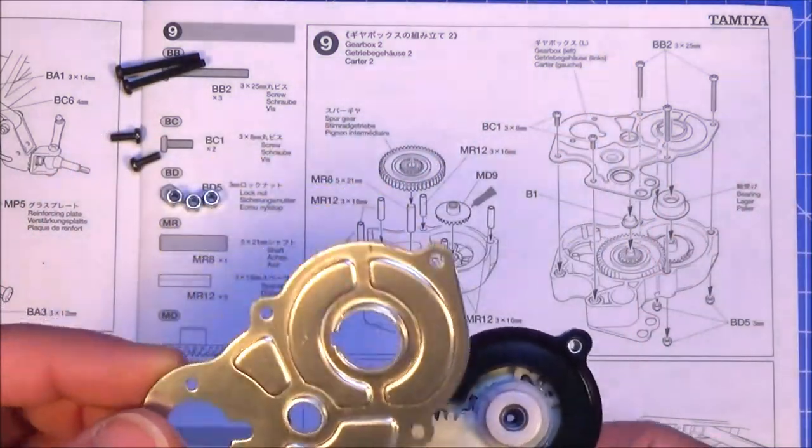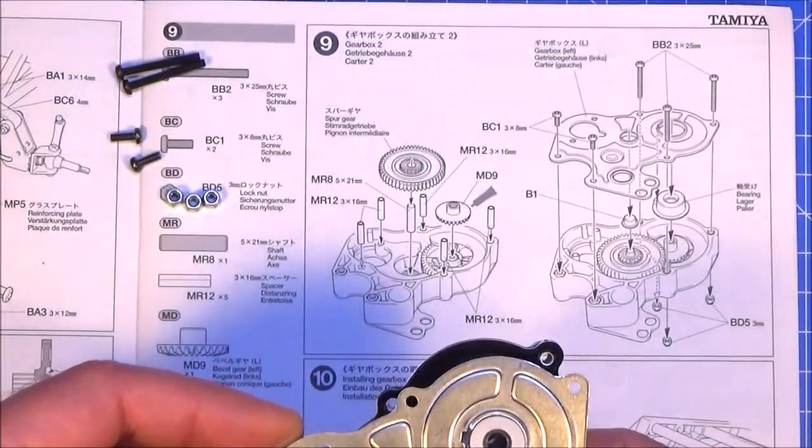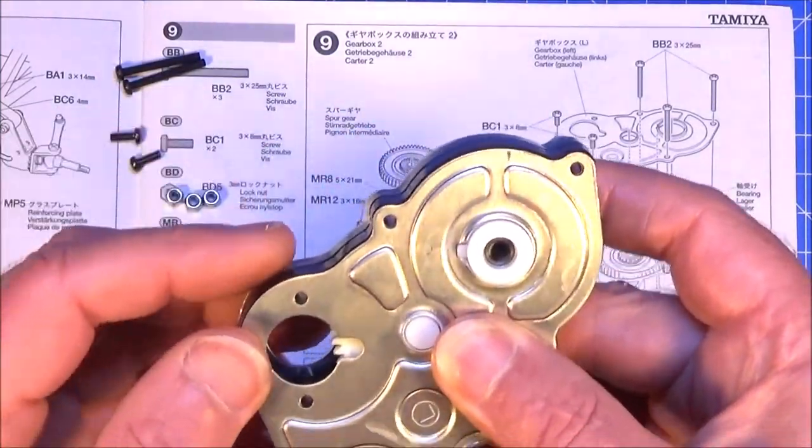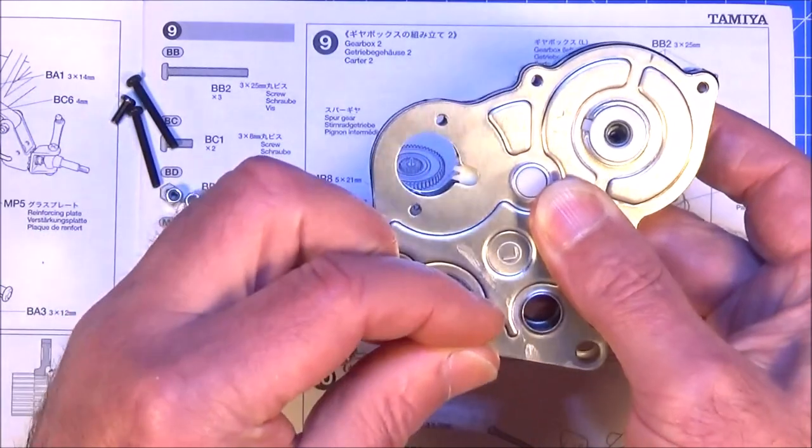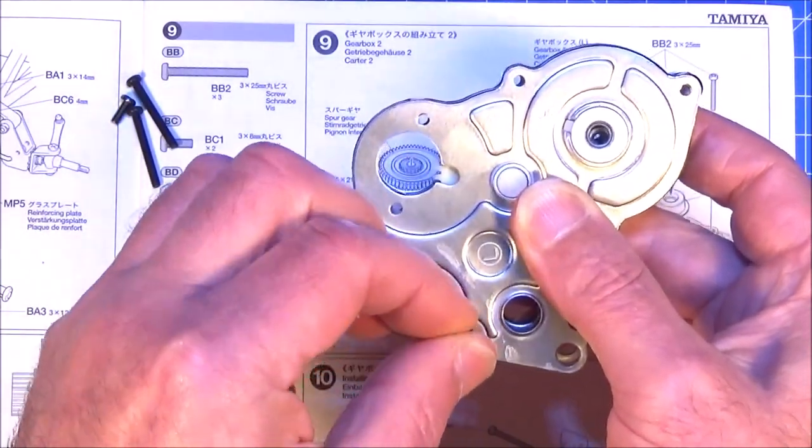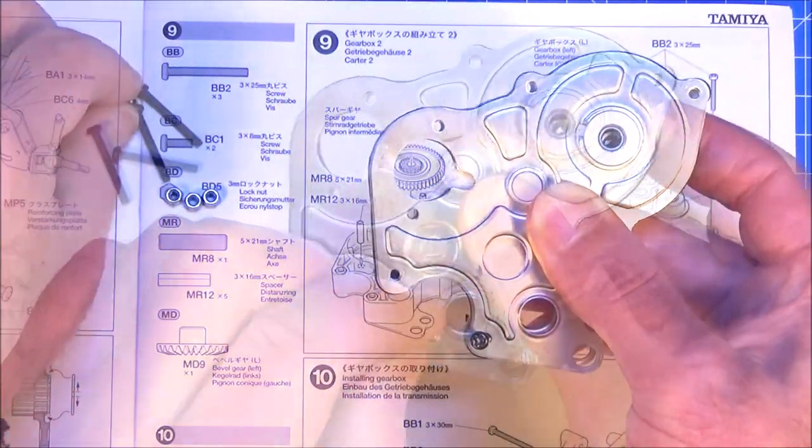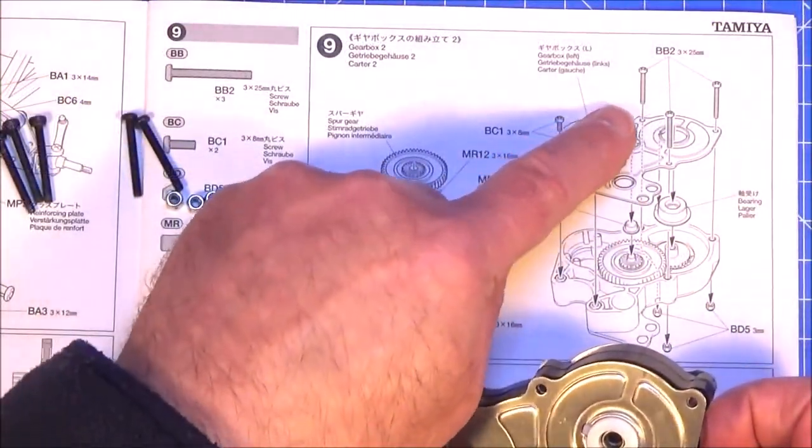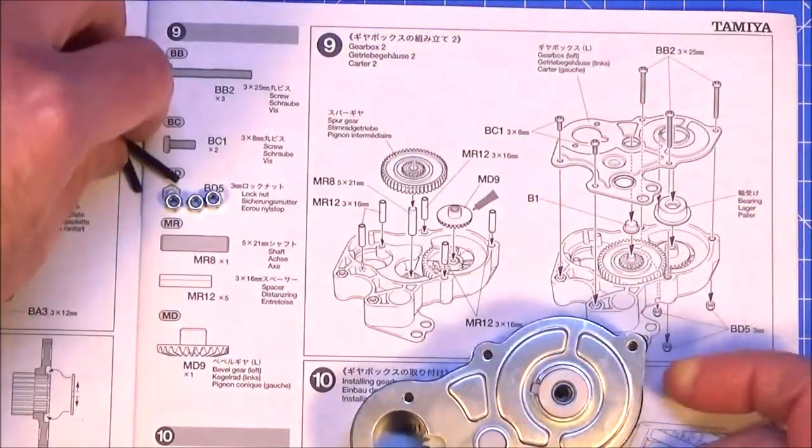What we need then is the left side of the gearbox plate, it's going to go over and hold all this together. Get that piece in there and again you want your two temporary 3x8 little screws just hold it together for now in those two holes.